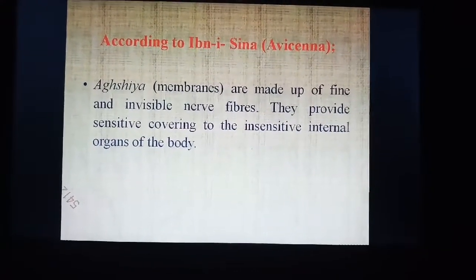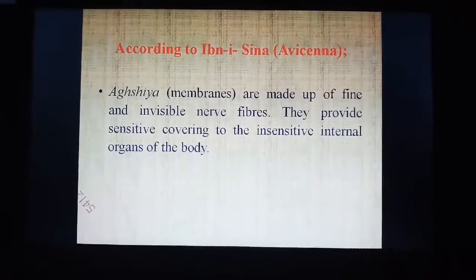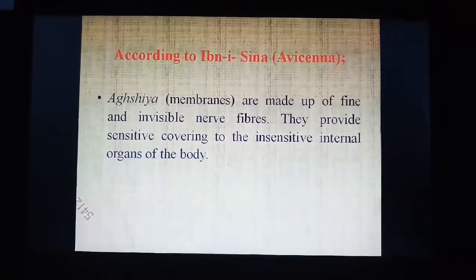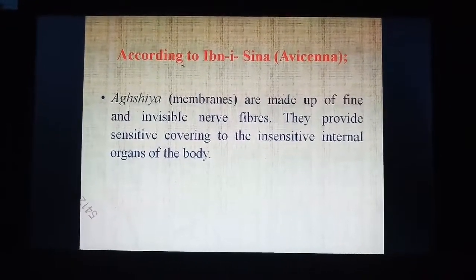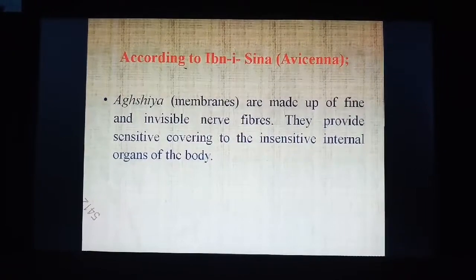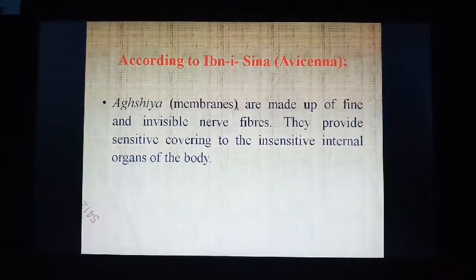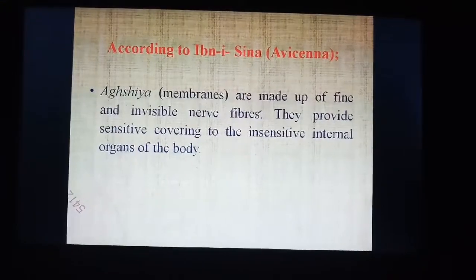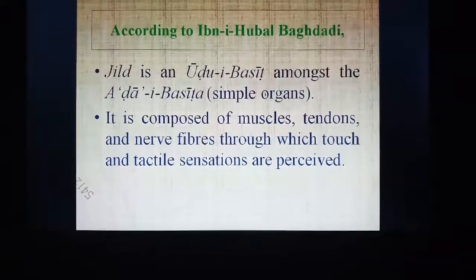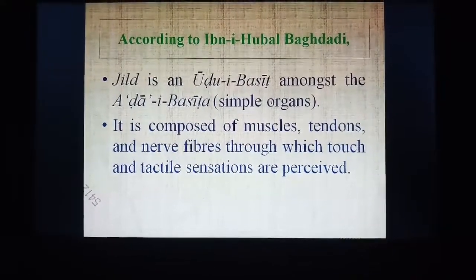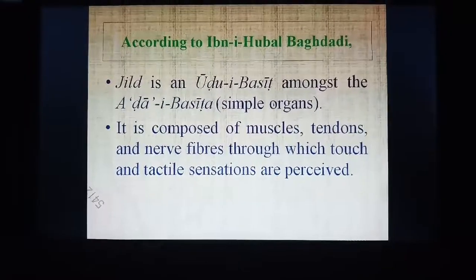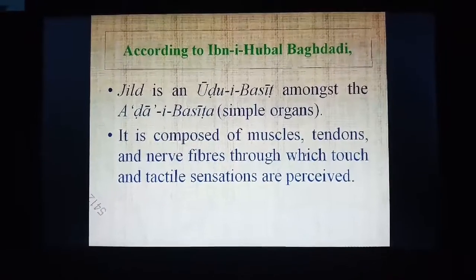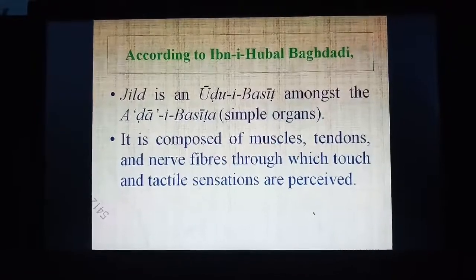According to Ibn Sina, also called Avicenna, the ashiya or membranes are made up of fine and invisible nerve fibers and they provide sensitive covering to the insensitive internal organs of the body. Similarly, the skin provides sensitive covering to the outer portions of the body. According to Ibn Hubal Baghdadi, the skin is an uzw basit, meaning a simple organ, composed of muscles, tendons, and nerve fibers through which touch and tactile sensations — hiss-e-lams — are perceived.